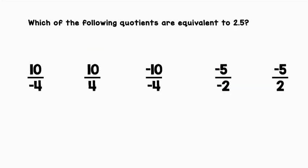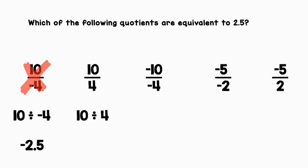Which of the following quotients are equivalent to 2.5? Let's start at the left. 10 over negative 4 can be rewritten as 10 divided by negative 4. A positive divided by a negative is a negative, giving us negative 2.5 — so that one is not equivalent. 10 over 4 can be rewritten as 10 divided by 4. A positive divided by a positive is a positive, so our answer is positive 2.5 — we can give this a check.